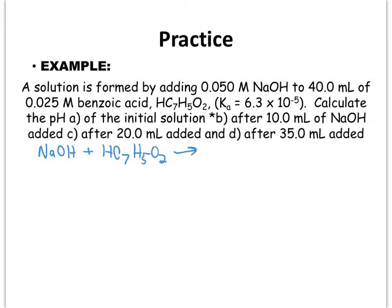Before we go through the problem, it's very important to write the overall equation for this reaction. We have sodium hydroxide reacting with benzoic acid. For an acid-base neutralization reaction we use a forward arrow and typically generate a salt plus water. Remember, this salt is going to be important. When we get to the equivalence point, because this salt came from a weak acid and strong base, the salt is actually going to be able to hydrolyze with water, giving us a pH greater than 7.